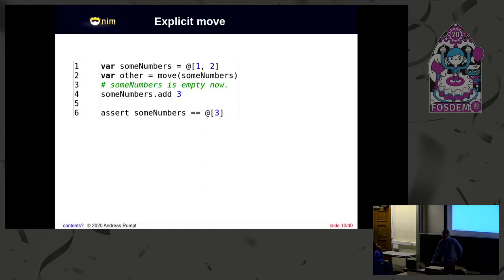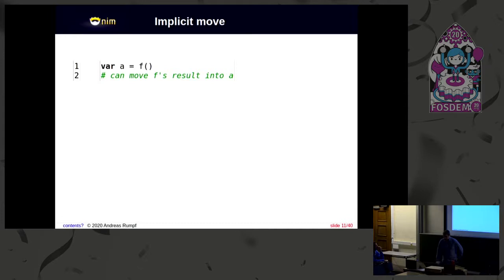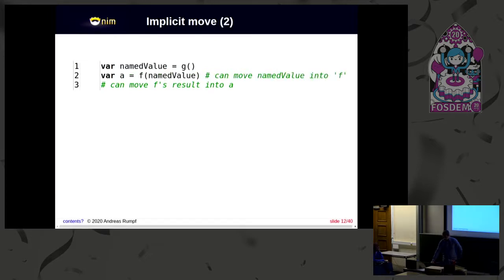But there are plenty of cases where you can move implicitly. The first example, famous, if you have a result of a function call, you know it's not going to be used afterwards, so you can move directly into the variable A. And then you could also say that if you know that it's not used afterwards, this is what you can do. You can move it. So one design goal was to make this work. Like, we know function calls can be moved, but I want to be able to name my results for readability without performance overhead. So as long as named value is a local variable, the Nim compiler can see that named value is used for the F call and not afterwards anymore. So it would move the named value into the F and then it would move F's result into A.